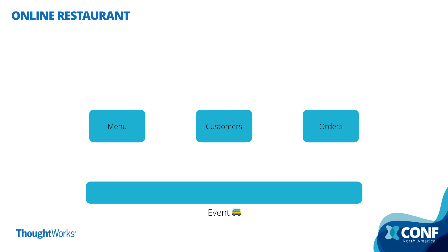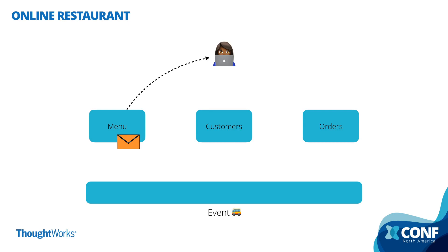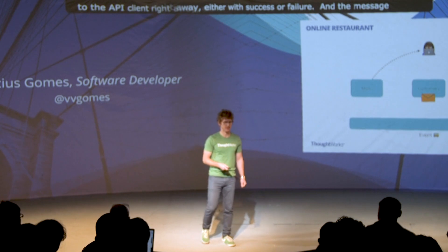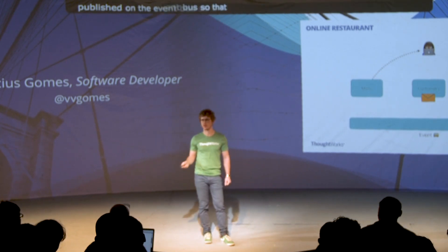So the data flow in an application like that will go like this. Let's say that we have an API client who wants to send a change request to one of the services. A request will be made to one of the services, business logic will execute, and eventually if everything goes well, an event will be created. A response is sent back to the API client right away, either with success or failure.